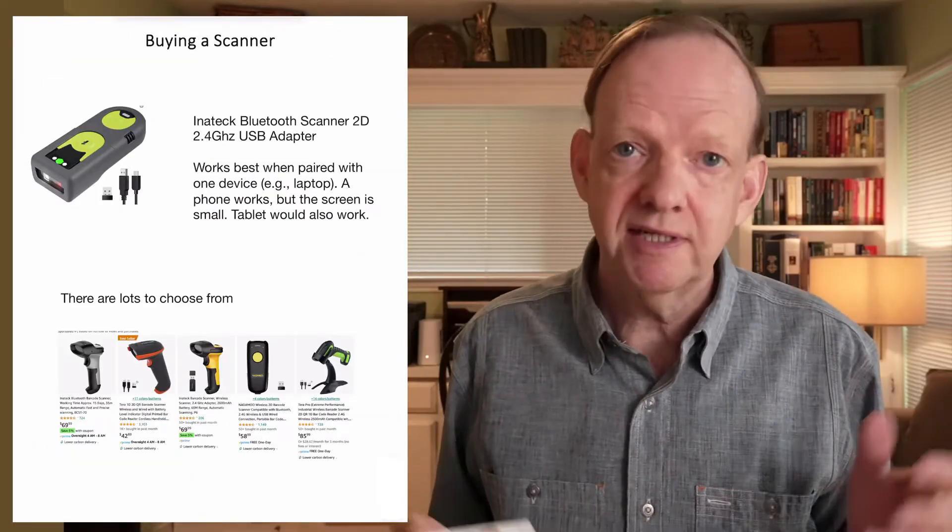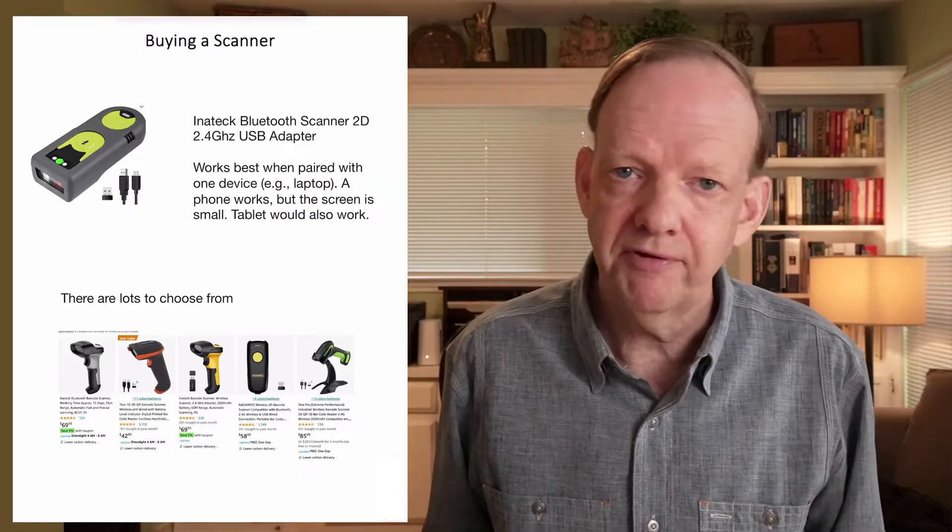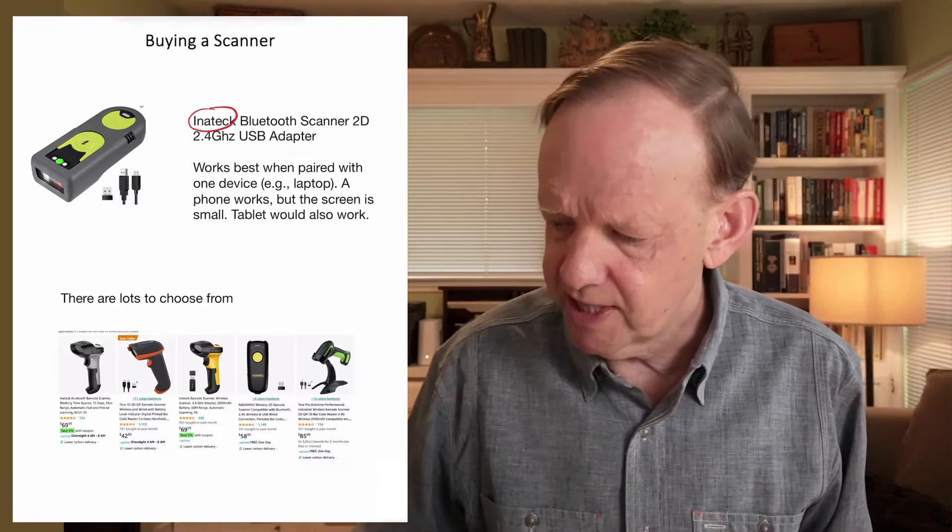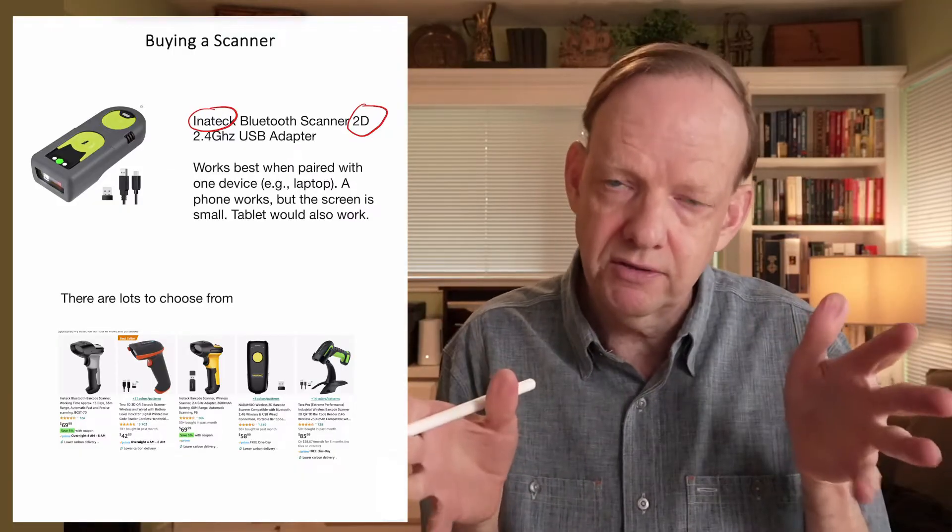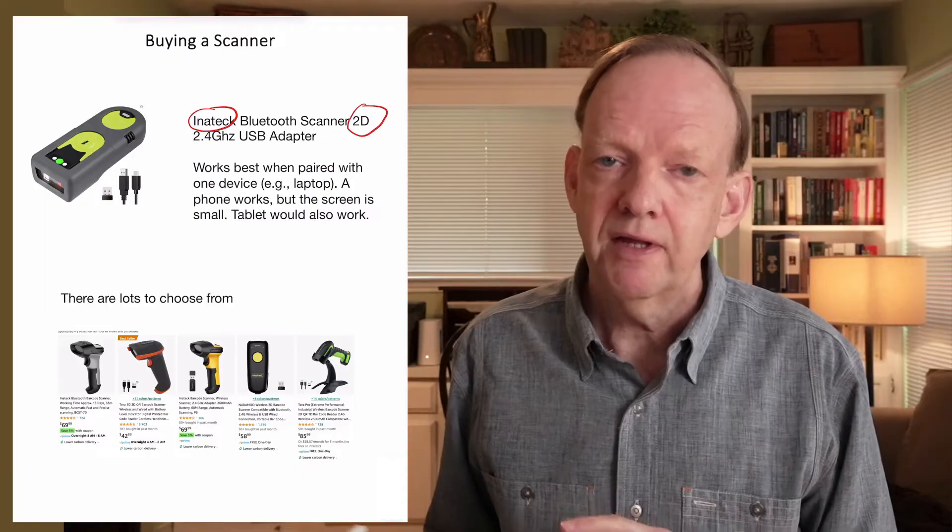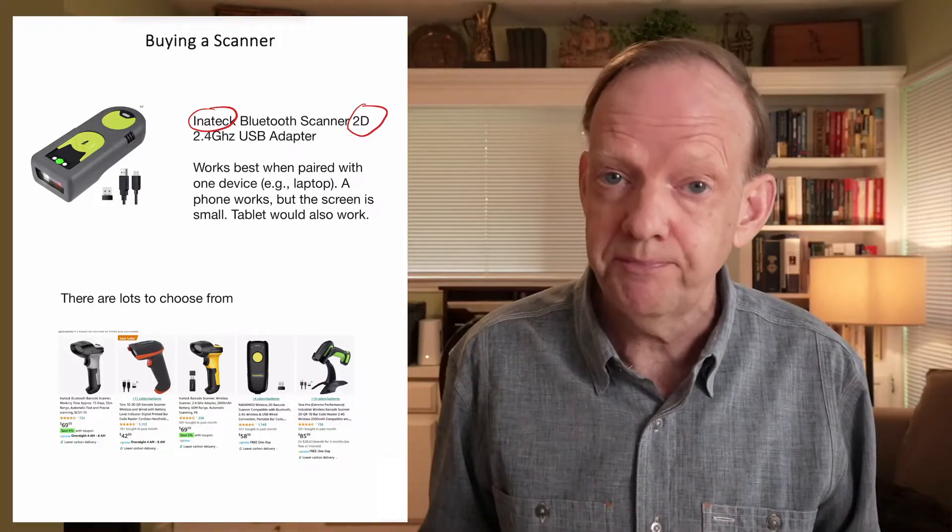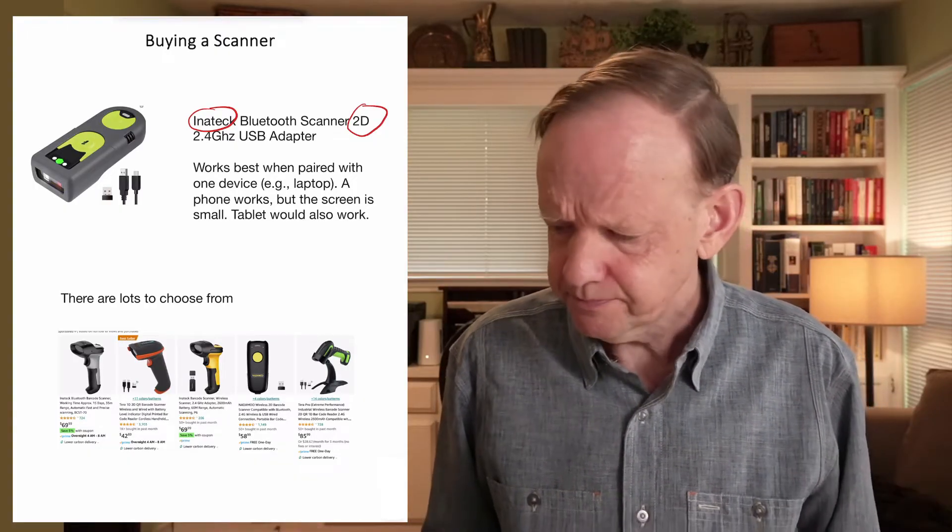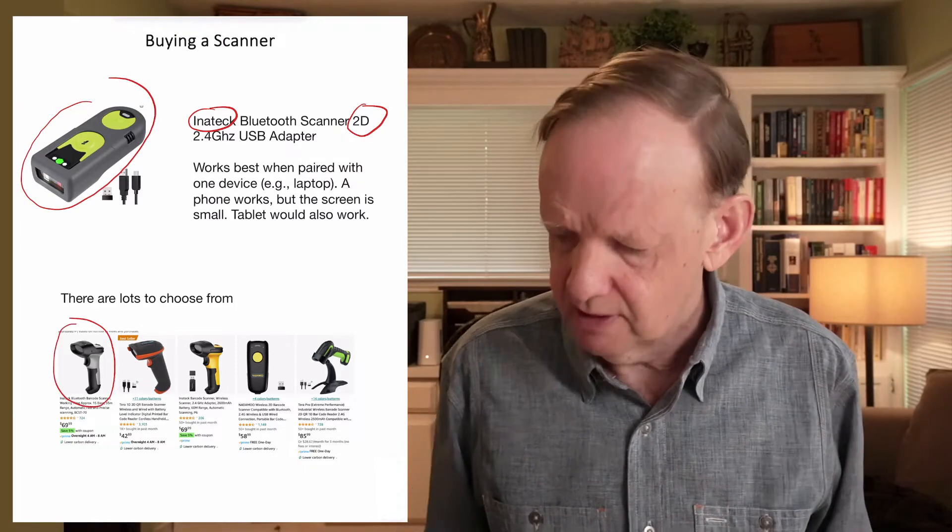In terms of a scanner, there's a zillion scanners out there, just go to Amazon or some place like that, and you'll find a zillion scanners. They're all about $50 to $70, plus or minus. The one I selected was by InnerTech. It's a 2D scanner. A 1D scanner is a barcode, one dimension. A 2D scanner is for a QR code, two dimensions like a square. I picked one that did both, because although we're not doing QR codes right now, I wanted the ability to scan QR codes. You may have products that have QR codes on them. Therefore your scanner would better deal with that and the barcode. So look for the 2D one.